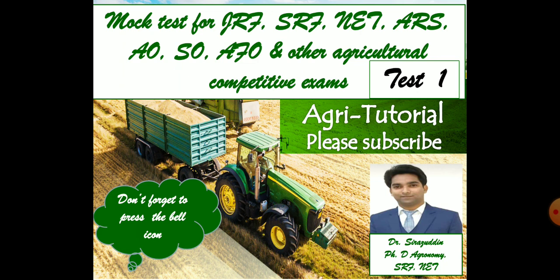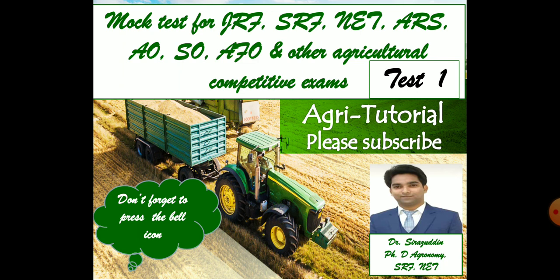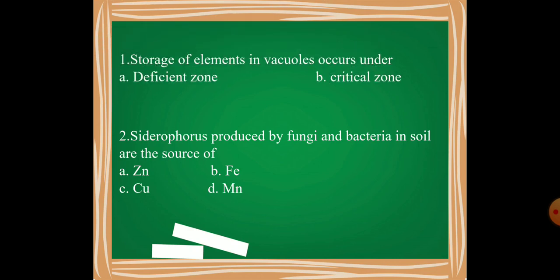Question number one: The zone in which there is no plant growth increase with the increase of nutrients supply is called as deficient zone, critical zone, luxury consumption, or toxic zone?